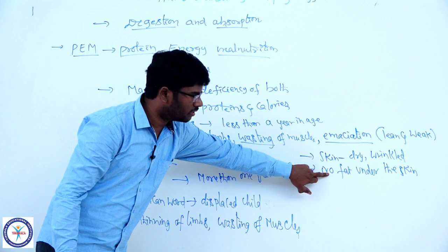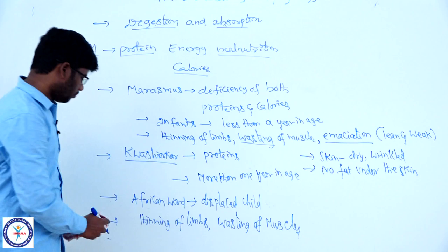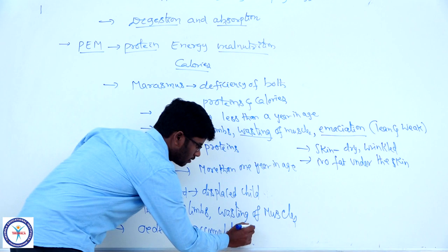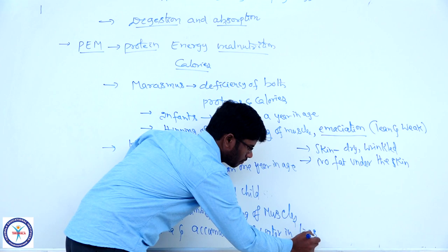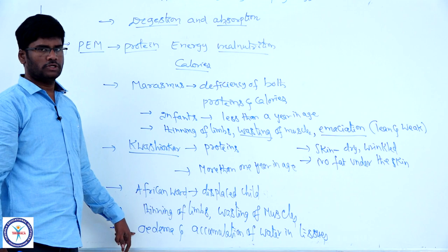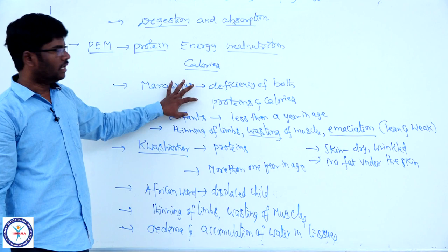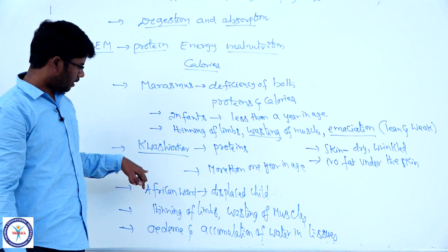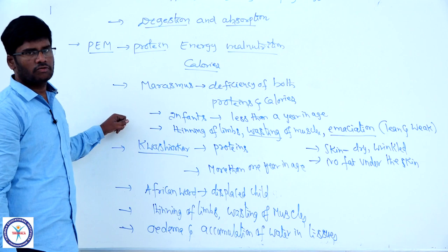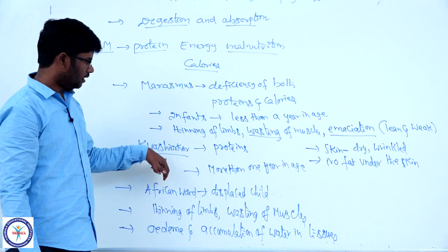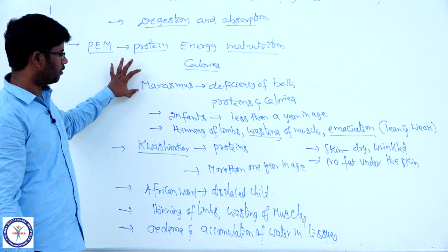The main difference between marasmus and kwashiorkor is that there is no fat under the skin in marasmus, but there is fat under the skin in kwashiorkor. One more symptom in kwashiorkor is edema — accumulation of water in tissues causing swelling of body parts. Edema is absent in marasmus. Kwashiorkor occurs only due to protein deficiency; calorie intake is proper but the diet given to children is deficient in proteins.